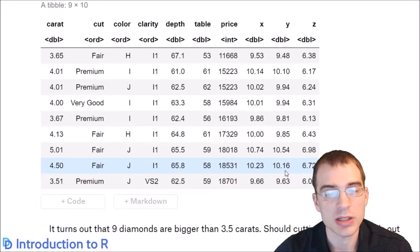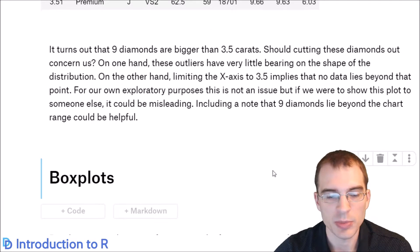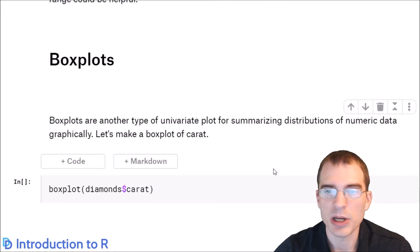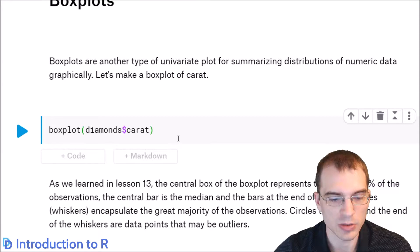So diamonds like these would be considered outliers because they're very far above the typical diamond. Another plot you can use to explore a distribution, and in particular view outliers, is a box plot. So we'll look into box plots next. What a box plot does is it basically just shows you the median and interquartile range for a variable. I will make it first, and then we can go over it.